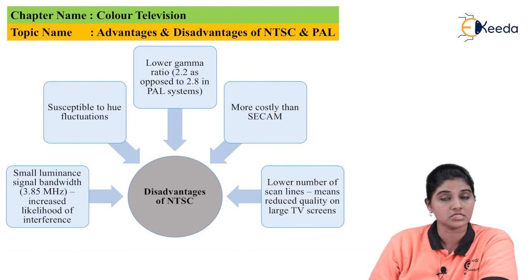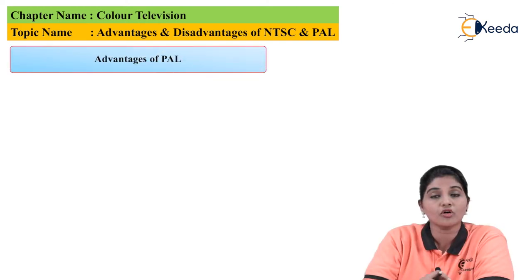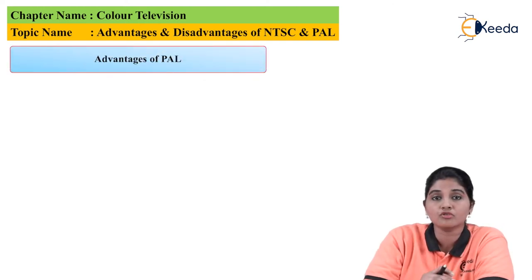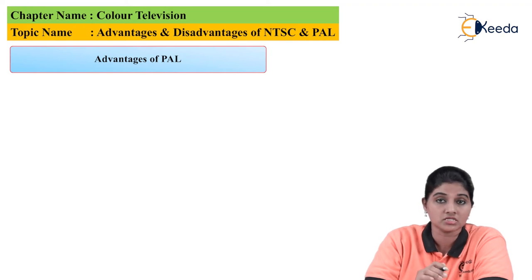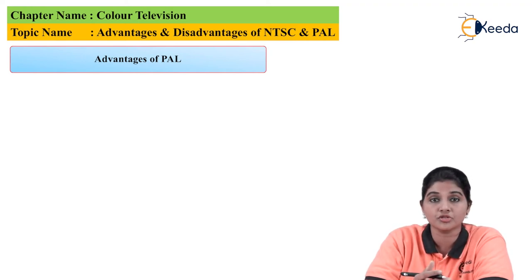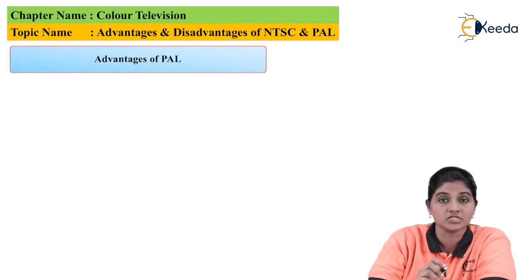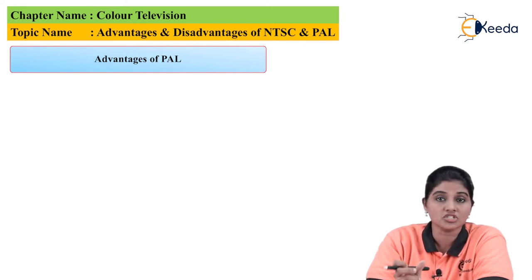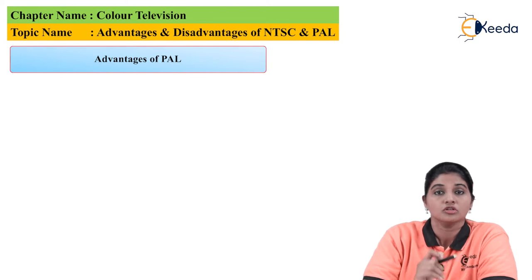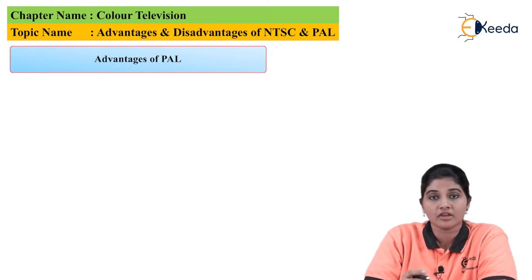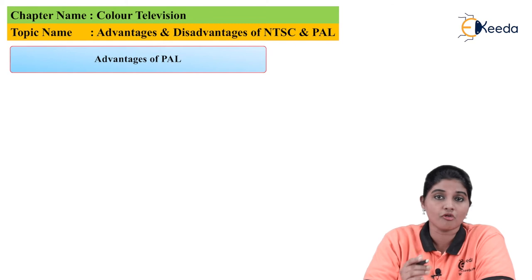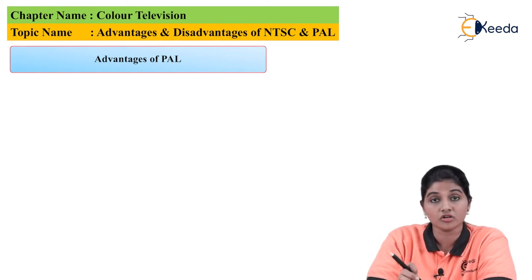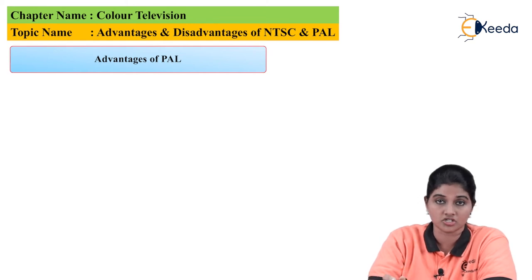Now let's move on to the PAL system. In order to overcome the disadvantages of the NTSC system, a modified version of NTSC comes into the picture — that is the PAL system, which stands for Phase Alteration Line. In NTSC, the hue of the picture changes in an open or broadcasting environment. By shifting the color subcarrier phase, it is possible to avoid the hue-changing problem of NTSC, and this modified version is called PAL — Phase Alteration Line.